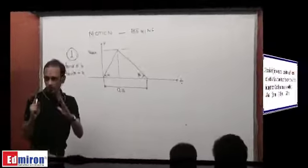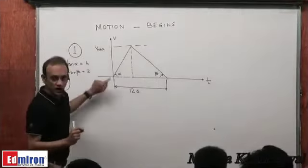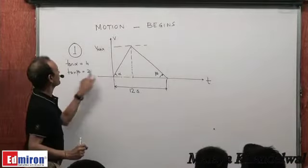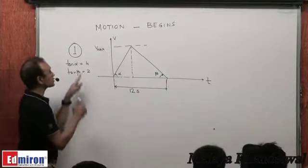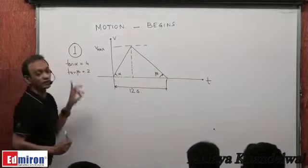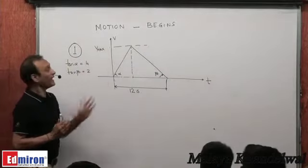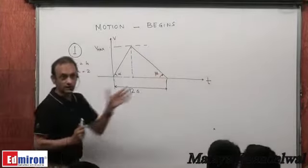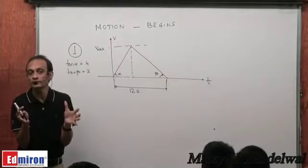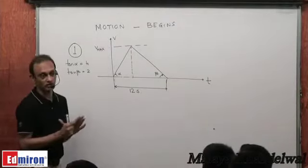The first problem is about a particle starting from rest with an acceleration of 4 meters per second squared, reaching a maximum velocity, then having a retardation of 2 meters per second squared and eventually coming to rest. The total time of the journey is given as 12 seconds, and we want to find the maximum velocity.